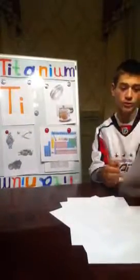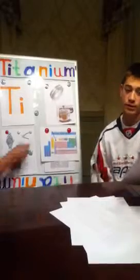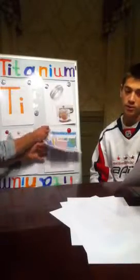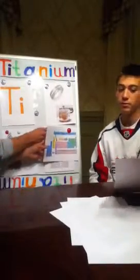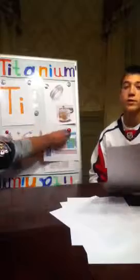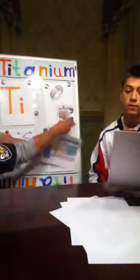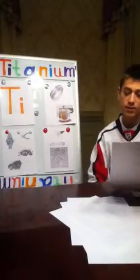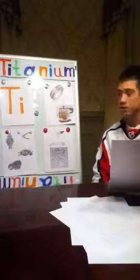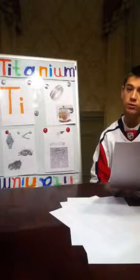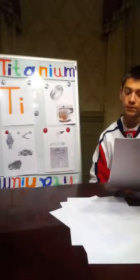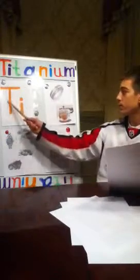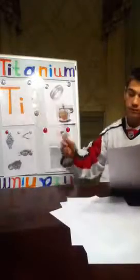Name, origin, symbol, and density: titanium is from the Greek word titans, a mythological term meaning the first sons of Earth. Its density is 4.5 grams per cubic centimeter. The symbol is Ti — capital T, lowercase i.